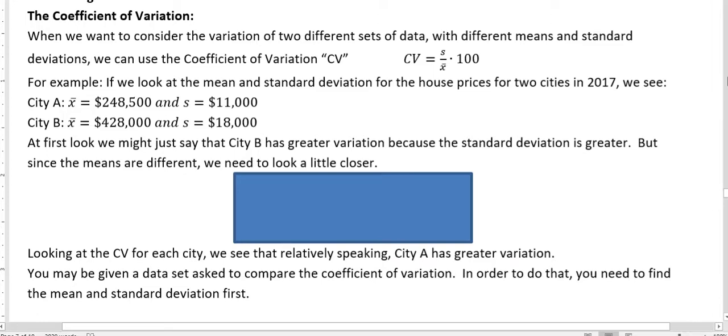When we want to consider the variation of two different data sets with different means and standard deviations, we can use the coefficient of variation, or CV. The CV formula is the standard deviation of the sample divided by the mean, times 100. This gives you a percentage value.